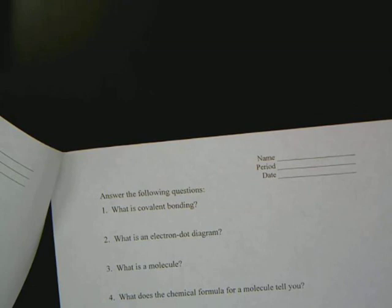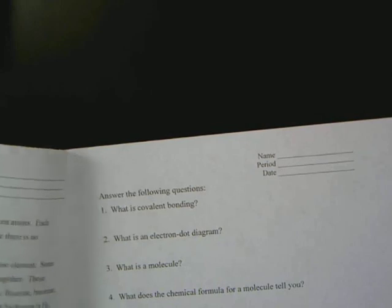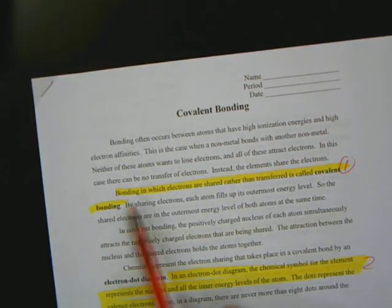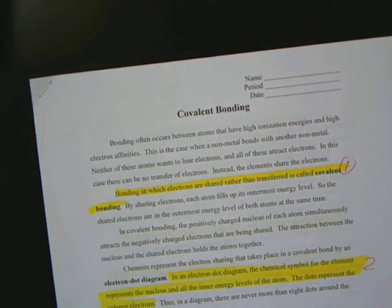You notice how mine is all nice and blank? It's because I'm lazy. Here's what the answer is though. When you look at what is covalent bonding, you go back to this second paragraph right there, first sentence. This is bonding in which electrons are shared rather than transferred. It's called covalent bonding. That's what you need to have written in.